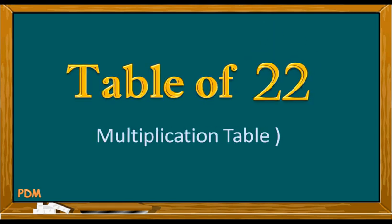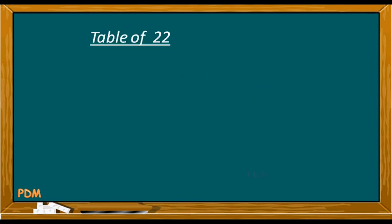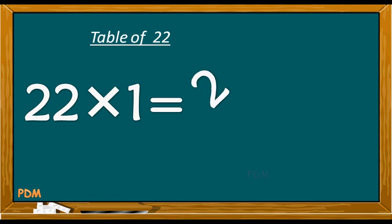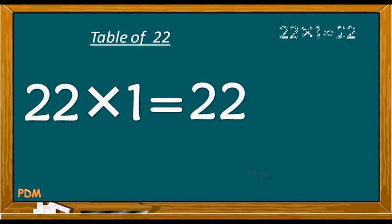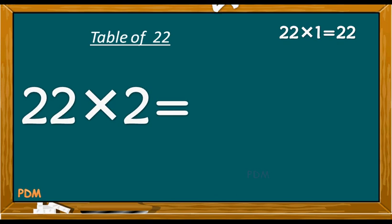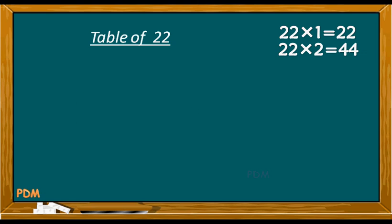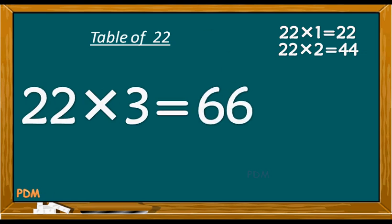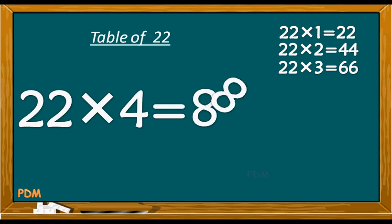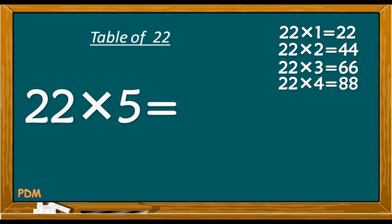22 ones are 22. 22 2's are 44. 22 3's are 66. 22 4's are 88. 22 5's are 110.